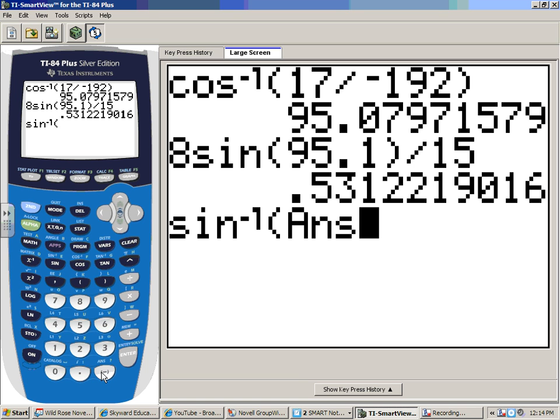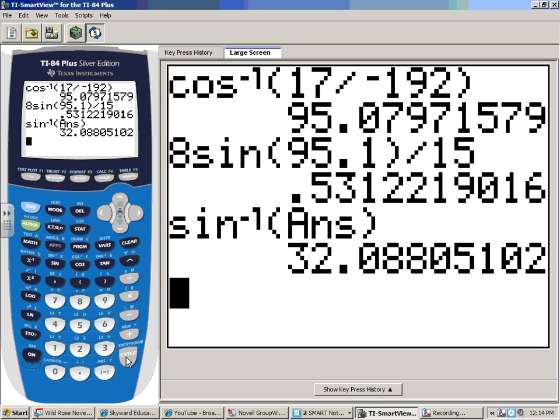And you bring up the answer. Remember, that's the easiest way to do that, so you don't have to write down that big, long decimal. Is this going to be more than 95 or less? What are we anticipating here? A lot less, right? And let's face it, if it was more than 95, we're already over 180 degrees, so we no longer have a triangle on this. And so we get 32.1.